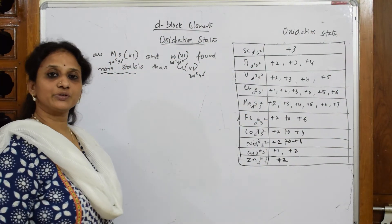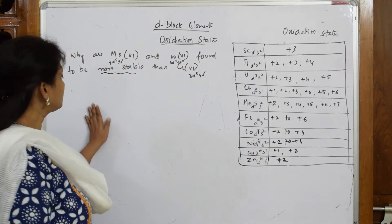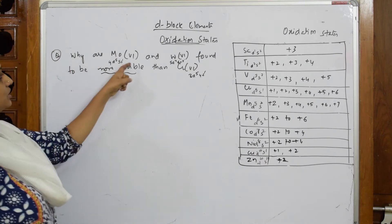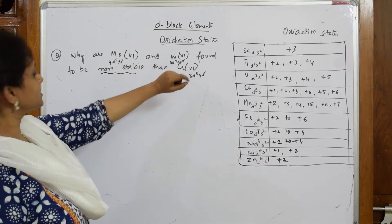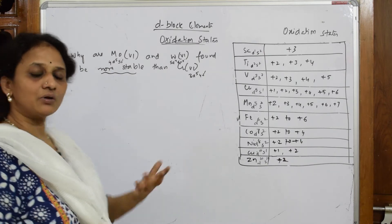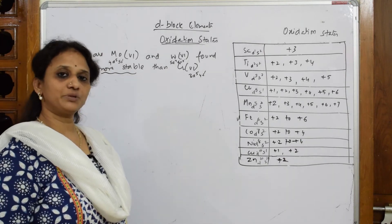Let us come back and solve one more question for oxidation states. So what is the question? Why are molybdenum(6) and tungsten(6) found to be more stable? Basically, why is the formation